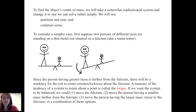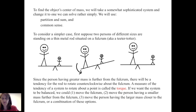A measure of the tendency of a system to rotate about a point is called the torque. If we want the system to be balanced, we could do one of a few things: move the fulcrum, move the person with smaller mass further from the fulcrum, move the person with the larger mass closer to the fulcrum, or do a combination of these options, resulting in an ideally balanced system.